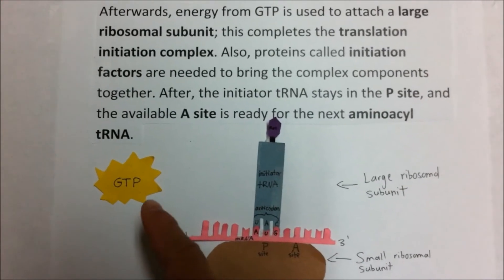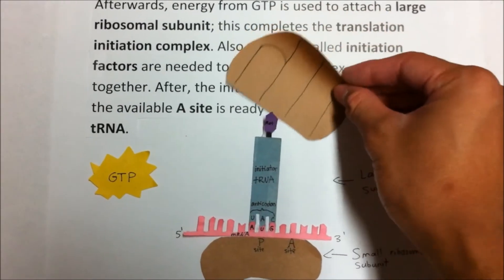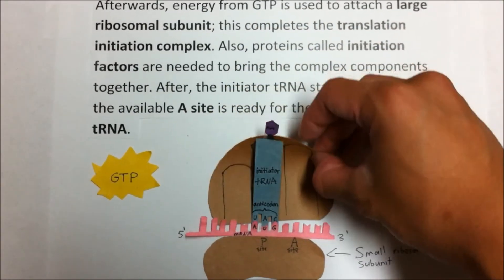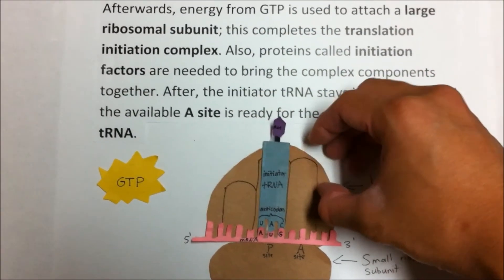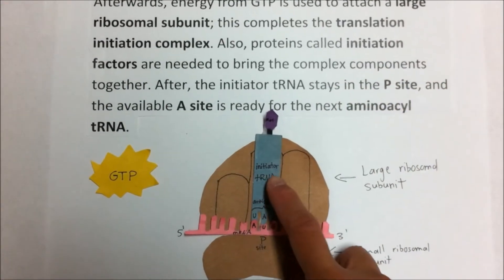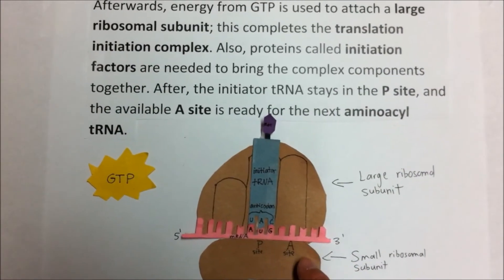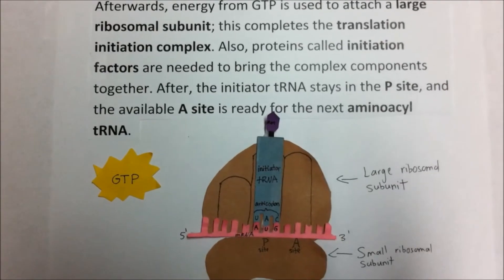Afterwards, energy from GTP is used to attach a large ribosomal subunit. This completes the translation initiation complex. After, the initiator tRNA stays in the P site, and the available A site is ready for the next amino acid tRNA.